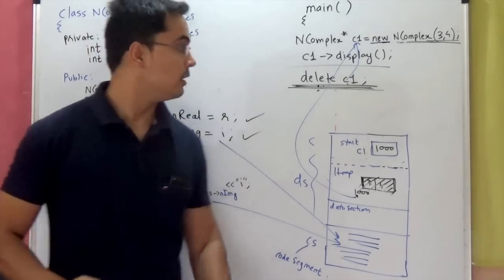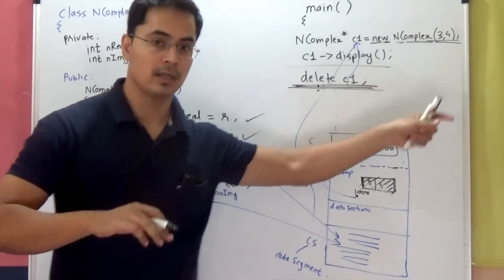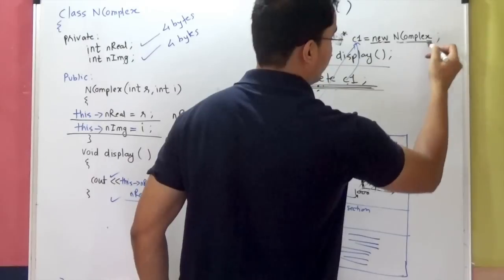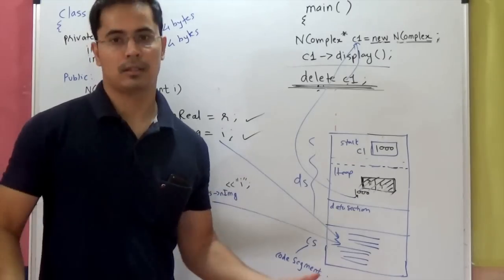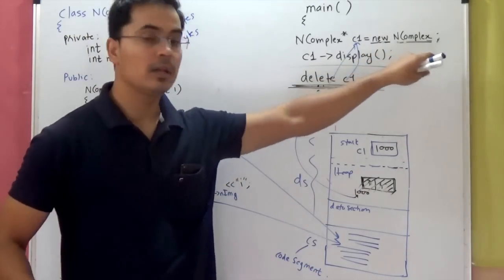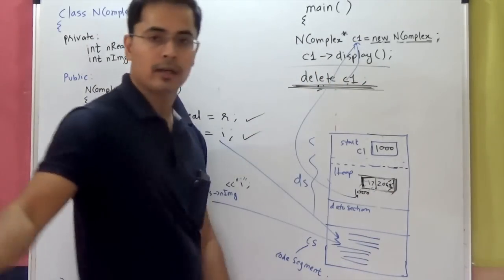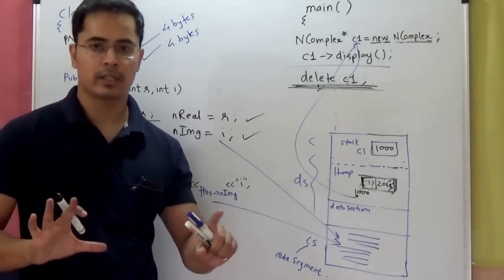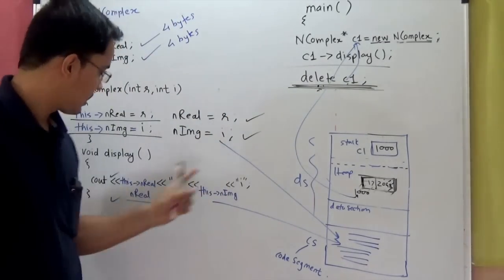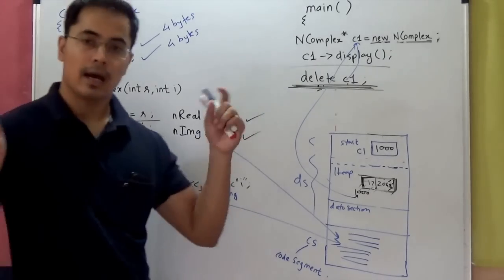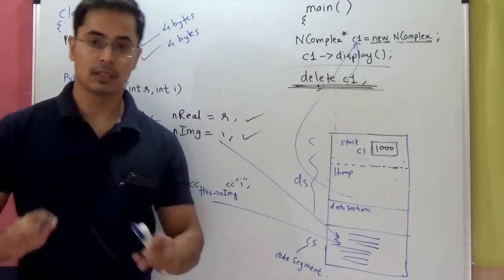The key thing to remember is: the new keyword, while creating objects, will call the constructor — in this case the parameterized constructor because we specified parameters. If you had just said new NComplex with no parameters, it would have called the default constructor, which initializes data members with garbage values. Similarly, delete will always first call the destructor — which is a member function used to de-initialize data — and after that it will deallocate the memory that was allocated dynamically. We will study destructors in detail in the upcoming videos.